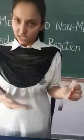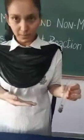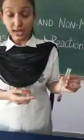And in test tube B, the copper sulphate solution turns transparent and brown deposition settles at the bottom.